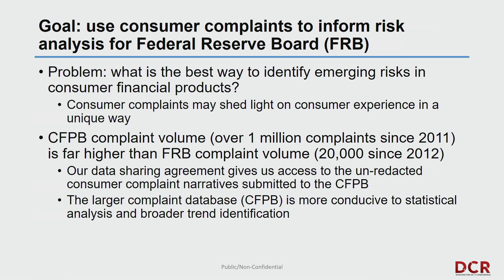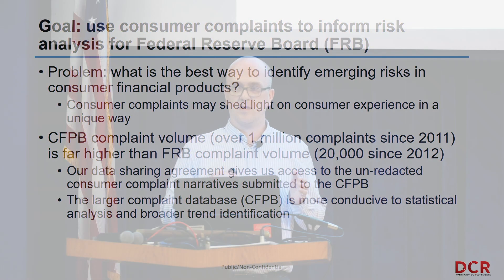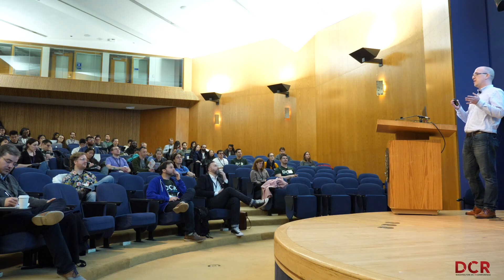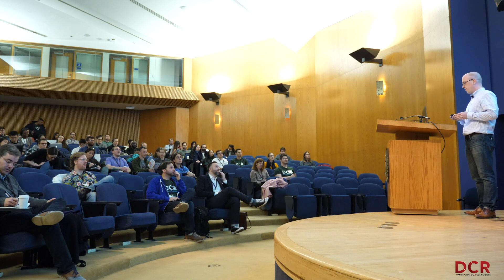The Federal Reserve has about 20,000 complaints, but the Consumer Financial Protection Bureau, or the CFPB, has over a million complaints. Through our data sharing agreement, we have access to the unredacted narrative text of these complaints, and that's a good source of information — it's just that there are some challenges to that.